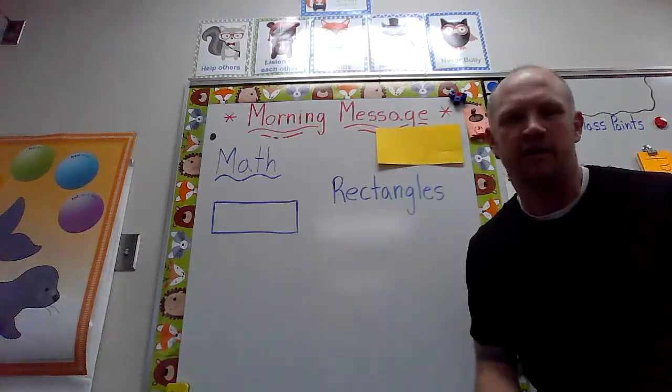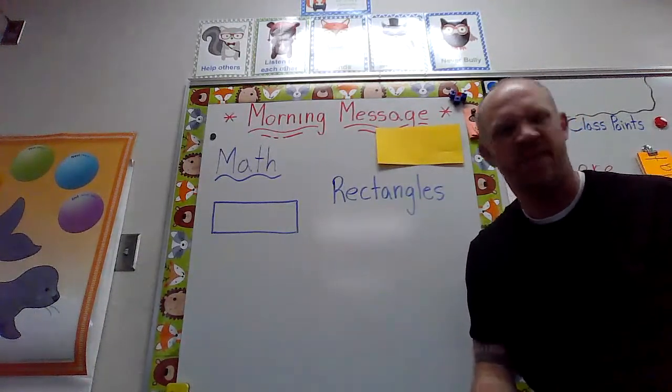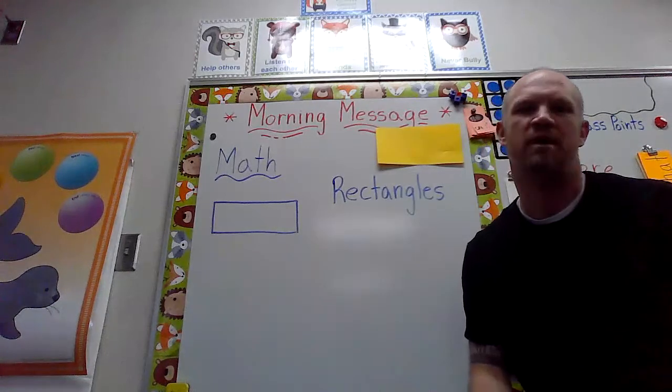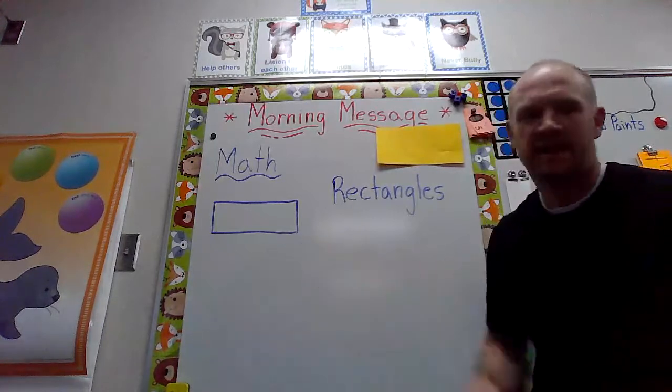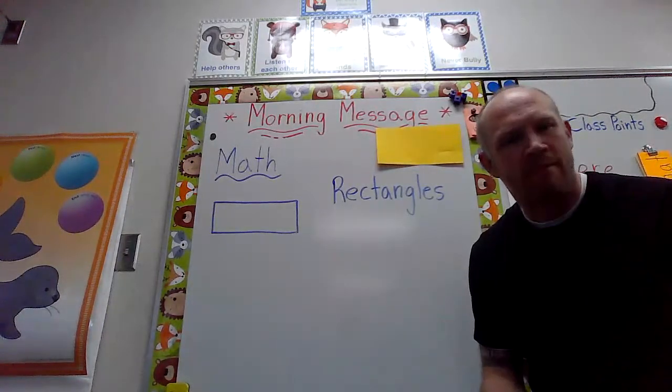Now the rectangle kind of looks like the square, doesn't it? It might be a cousin, it might be a relative, but it's a little different, isn't it? When you look at the rectangle, boys and girls, and you describe it mathematicians, how would you describe that shape that we're talking about today?